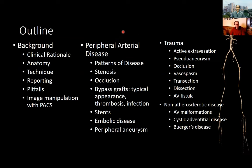Our outline over the next hour or so: our goal is to cover the background of AIF, why it might be requested, the anatomy, technique, some tips regarding reporting, as well as pitfalls of interpretation. Then we'll have a case-based approach to peripheral arterial disease, trauma, and a selection of non-atherosclerotic inflammatory disease you may encounter on an AIF. If you have any questions along the way, please feel free to ask.